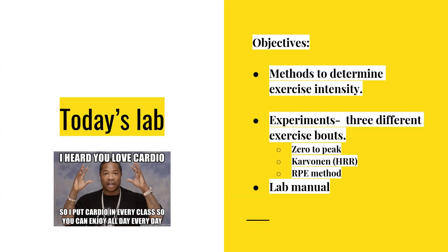The objective for this lab is to study the different methods to determine exercise intensity. We will be doing this by performing three different exercise bouts: the zero-to-peak, the Karvonen, and the RPE. Those three are different ways that we can prescribe exercise intensity, and we will be studying the zero-to-peak method, the Karvonen method or heart rate reserve, and the RPE method.